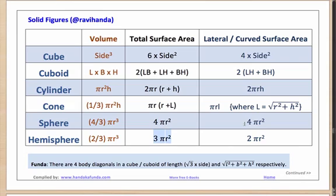The curved surface area of a full sphere is 4π R². In case of a hemisphere, if you remove the circle at the top, the curved surface area is 2π R². Another important point: there are 4 body diagonals in a cube and also in a cuboid. In a cube, the body diagonal is √3 times the side, whereas in a cuboid it is √(L² + B² + H²).